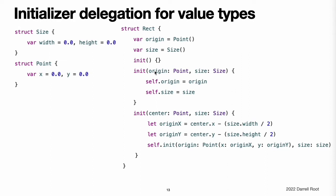The first Rect initializer, init, is functionally the same as the default initializer that the structure would have received if it did not have its own custom initializers. This initializer has an empty body represented by an empty pair of curly braces. The second Rect initializer, init(origin:size:), is functionally the same as the memberwise initializer that the structure would have received if it did not have its own custom initializers. This initializer simply assigns the origin and size argument values to the appropriate stored properties.